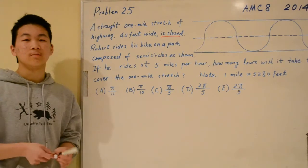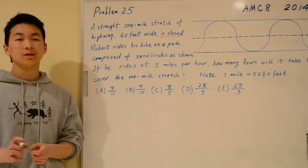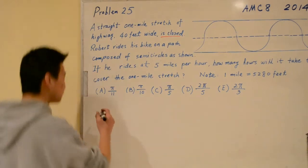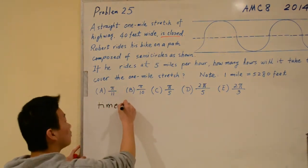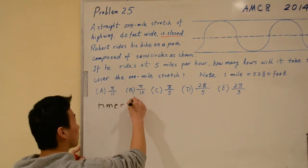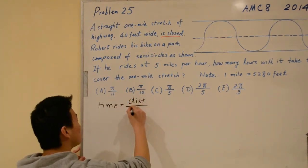Let's get to the math. The relationship between time, distance, and speed is time equals distance divided by speed.